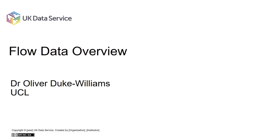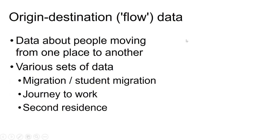Thanks to Dave for that review of aggregate data. I'm going to talk about the flow data, which are another census output — rather less well known than the aggregate data. Flow data, or origin-destination data, are data about people moving from one place to another. Various sets of those have been produced from the census for several iterations.